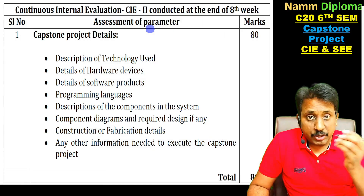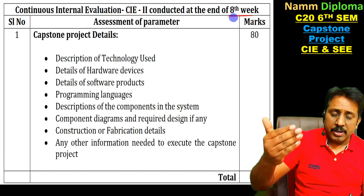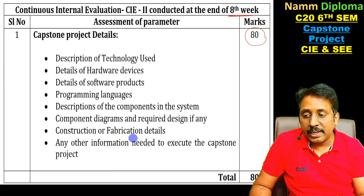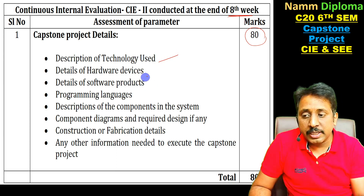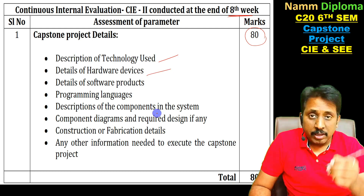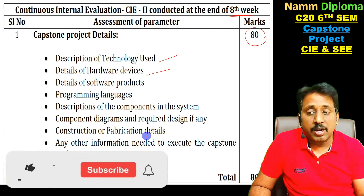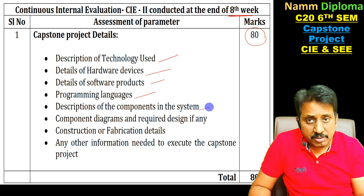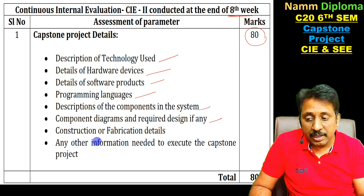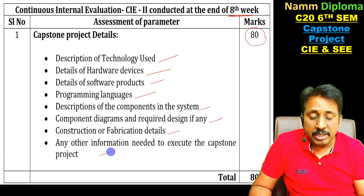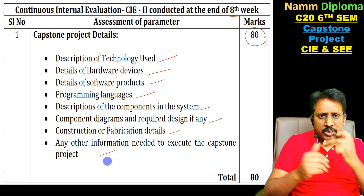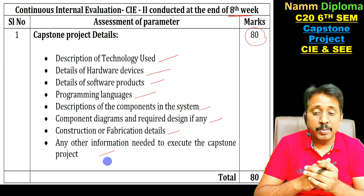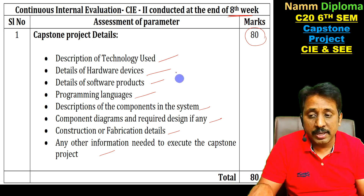CIE 2 is at the end of the 8th week and carries 80 marks. It covers the middle development phase of the project: description of technology used, details of hardware and software, electronics or mechanical components, programming language, component diagrams, system design layout, fabrication details, and any other information needed to execute the capstone project. Submit a written report for 80 marks.